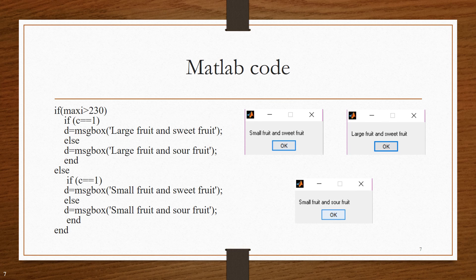Similarly, another threshold is fixed to be 230. So, if the maximum distance between two white pixels is greater than 230, then if the c value is 1, then it is a large fruit which is sweet or else it is a large fruit which is sour.